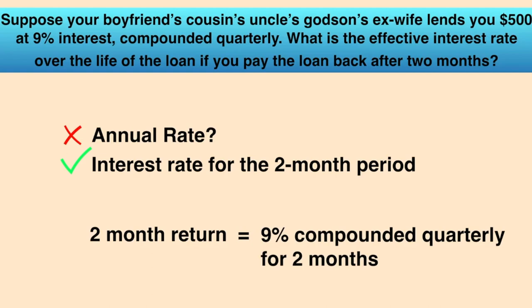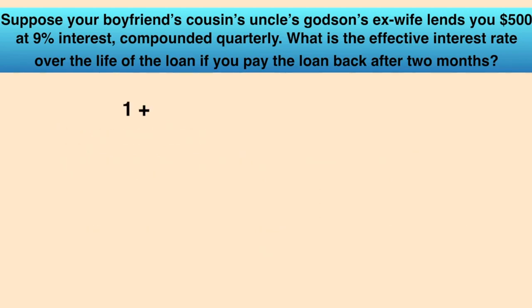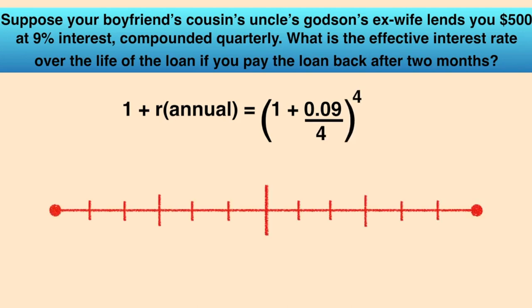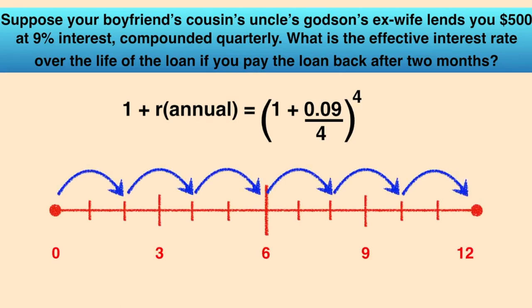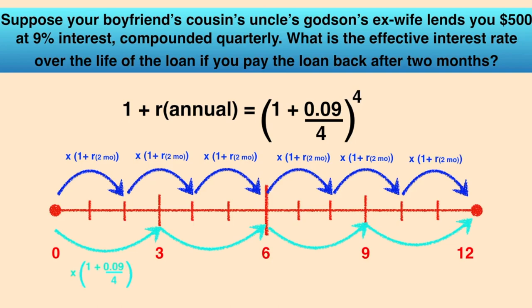We can start this problem in a similar way to how we would calculate the effective annual rate. If we were calculating EAR, we would think of one year as one compounding period, and calculate the interest rate that would earn us the same return compounded only once per year as we earn on our interest compounded each quarter. Except here, we want to find the effective return for a two-month period instead. If interest were compounded only once in a two-month period, then we would have six periods in a year. We want to know what rate compounded six times in a year is equivalent to the return we earn in one year at 9% interest, compounded quarterly.